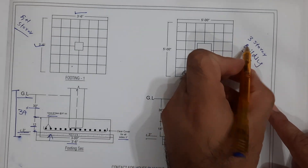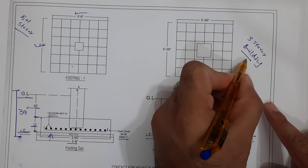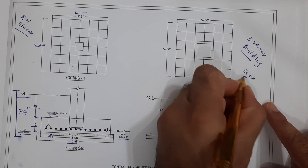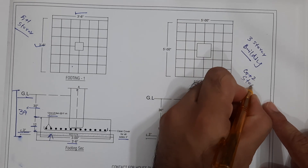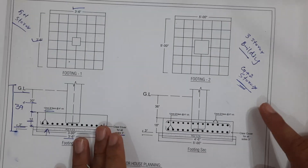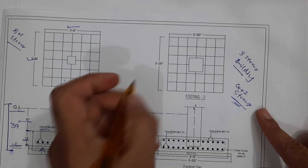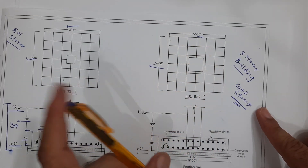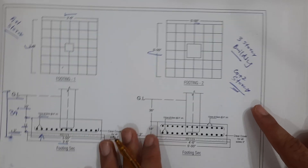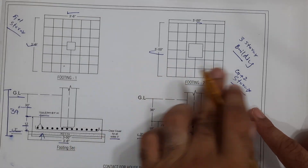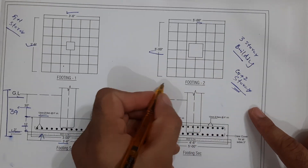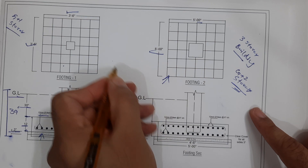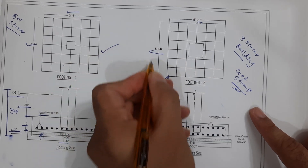The next one is footing two, designed for a three-storey (G+2) residential building. The size is five by five feet. You can see the steel reinforcement with main bars and distribution bars — this is also a square individual footing.